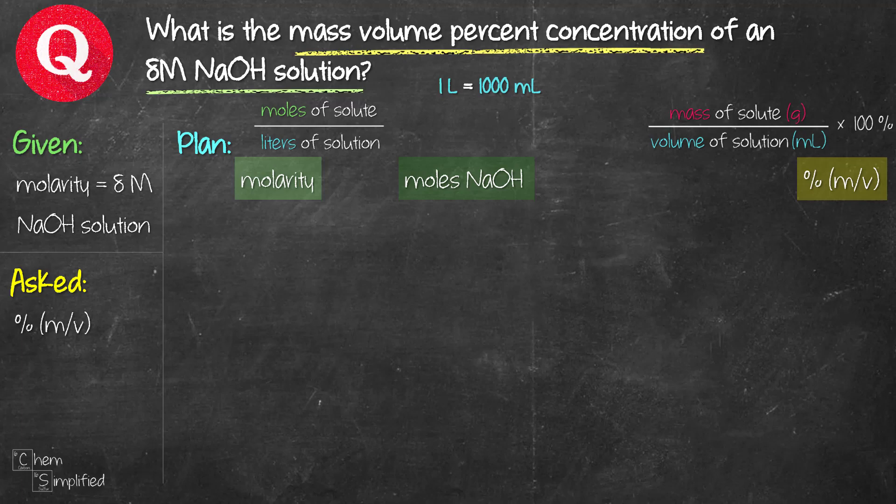So once we figure out the moles of NaOH, we can find out the mass of NaOH. And the plan to do that is by using the molar mass. This is a stoichiometry conversion converting from moles to mass. So we will use the molar mass. And with that 3 steps calculation, we'll be able to solve this question.